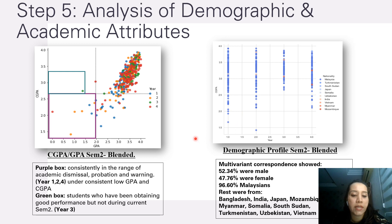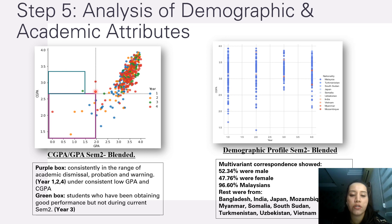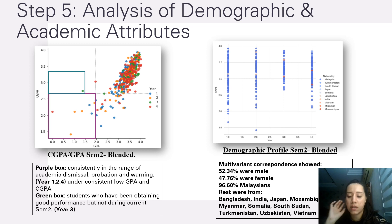For SEM 2, the blended learning method, the purple box shows year one, year two, and year four students consistently in the range of academic dismissal with consistently low GPA and CGPA. The green box shows students obtaining good performance but not during SEM 2 — specifically year three students. The demographic profile for SEM 2 was 52.34% male, 47.76% female, 96.607% Malaysian, with the remaining students from Bangladesh, India, Japan, Mozambique, Myanmar, Somalia, South Sudan, Turkmenistan, Uzbekistan, Vietnam, and others.